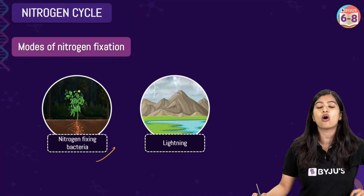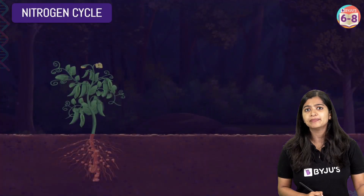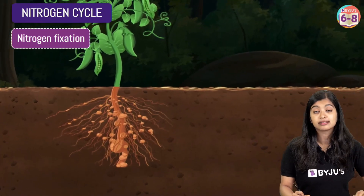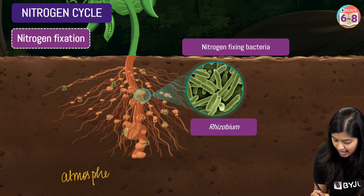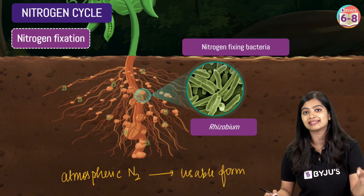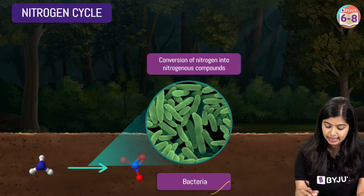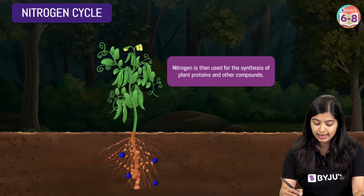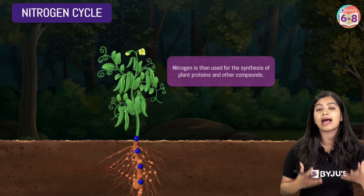That is why we have biological nitrogen fixation. There are nitrogen-fixing bacteria present in the root nodules of leguminous plants — these are known as Rhizobium. Rhizobium has the ability to convert atmospheric gaseous nitrogen into usable forms, which are nitrites and nitrates. Apart from this, various other bacteria present in the soil also help with conversion of nitrogen into nitrogenous compounds. Once this is done, the plants absorb these compounds through their roots to synthesize proteins and other components.